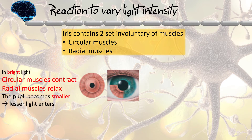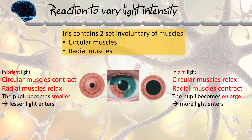In bright light, the circular muscle will contract and the radial muscle will relax. The pupil will become smaller and less light will enter. In dim light, the circular muscle will relax and the radial muscle will contract, so that the pupil becomes larger and more light will be able to enter.